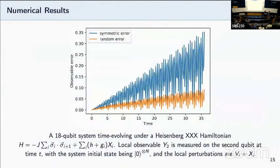Lastly, a simple numerical experiment to support the results. This is an 18 qubit system time evolving under Heisenberg Hamiltonian, where we have pairwise interactions, and we measure local observable y on the second qubit. Here, you can see the random error, which is the case with the cancellation, scales better than symmetric error case, which is the case without the error cancellation.